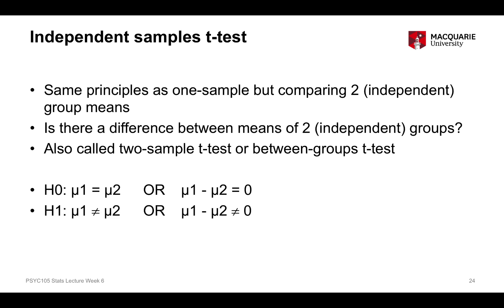The alternate hypothesis can also be represented one of two ways. On the left-hand side, we say the mean score for group 1 is not equal to the mean score for group 2. On the right-hand side, we say the difference between the mean scores for group 1 and group 2 is not equal to 0.